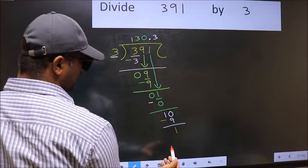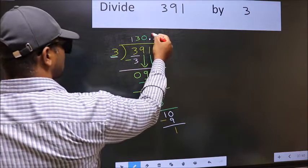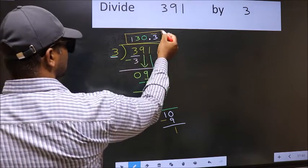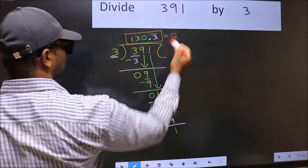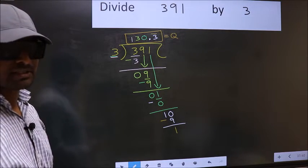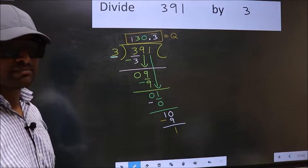We got 1 again. That means we get bar on this number. So this is our quotient. Did you understand where the mistake happens? You should not do that mistake.